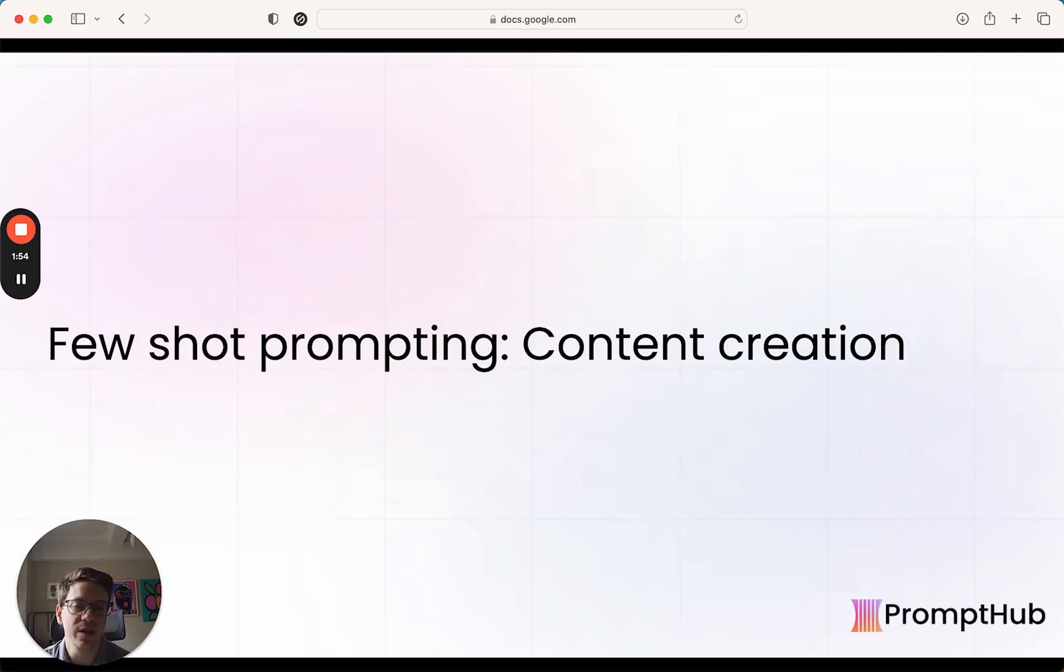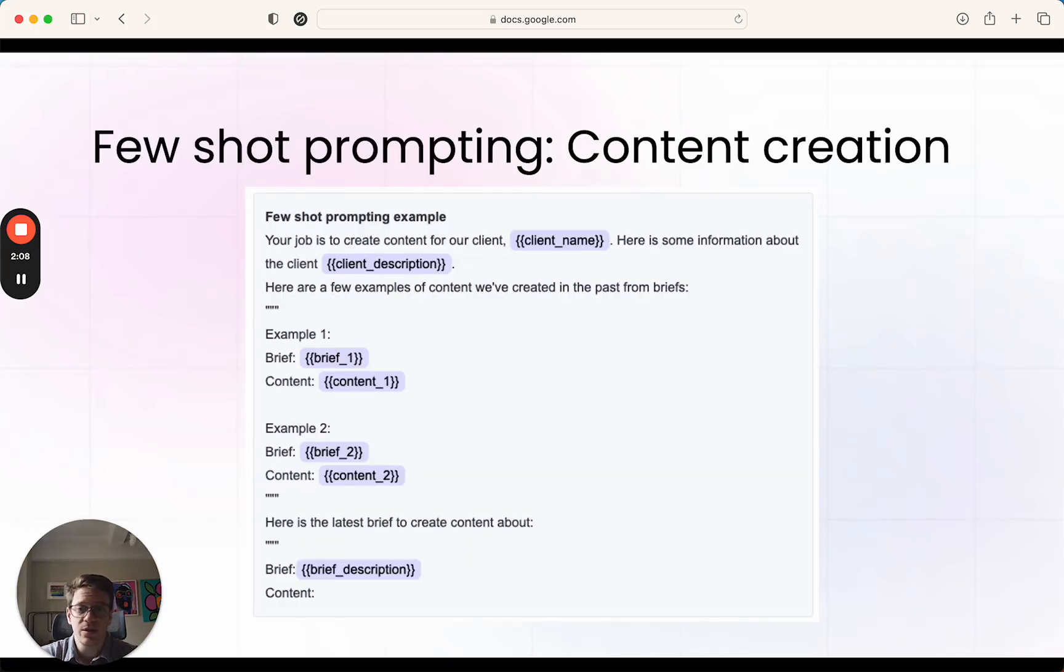So let's say we were like a digital marketing agency and we wanted to write a few-shot prompt that could be used to create content based on briefs for any client. Here's what that might look like. Running through this example, basically saying, 'Hey, your job is to create content for whatever client. Here's some info about the client, and then here's a couple of examples—briefs and pieces of content.' A brief would basically just be a description of what the content should be, and then the content that was created. These are historical, pulled from previous work with this client, and we know that this was content that was approved or that performed well or whatever the criteria might be.